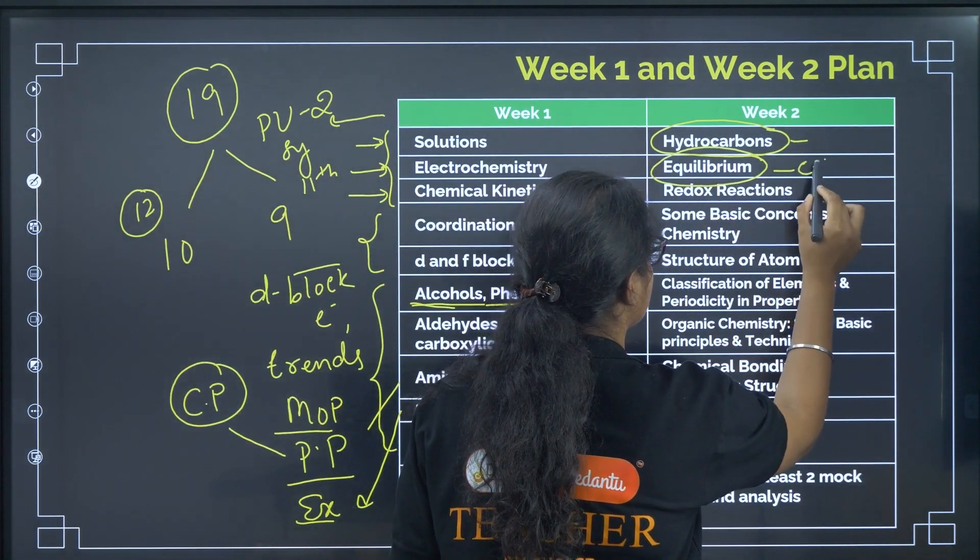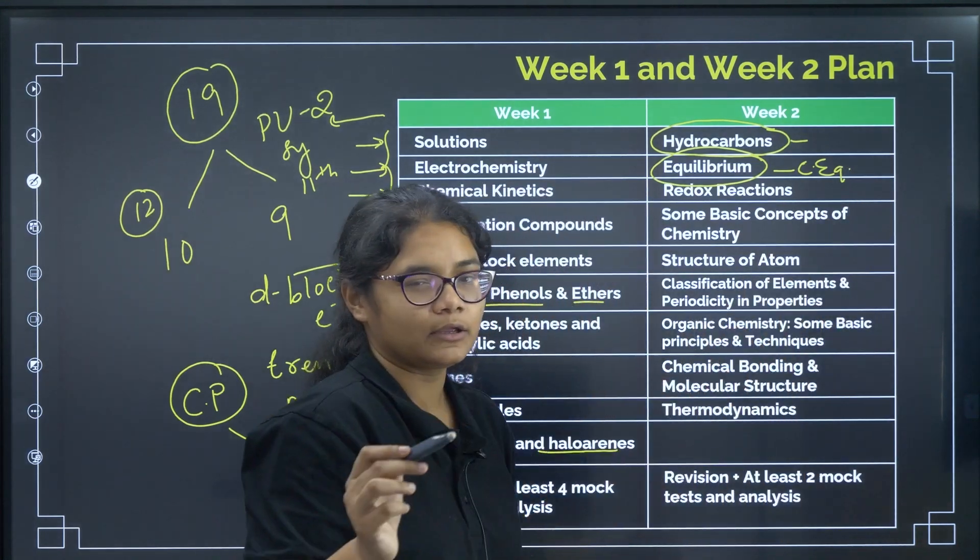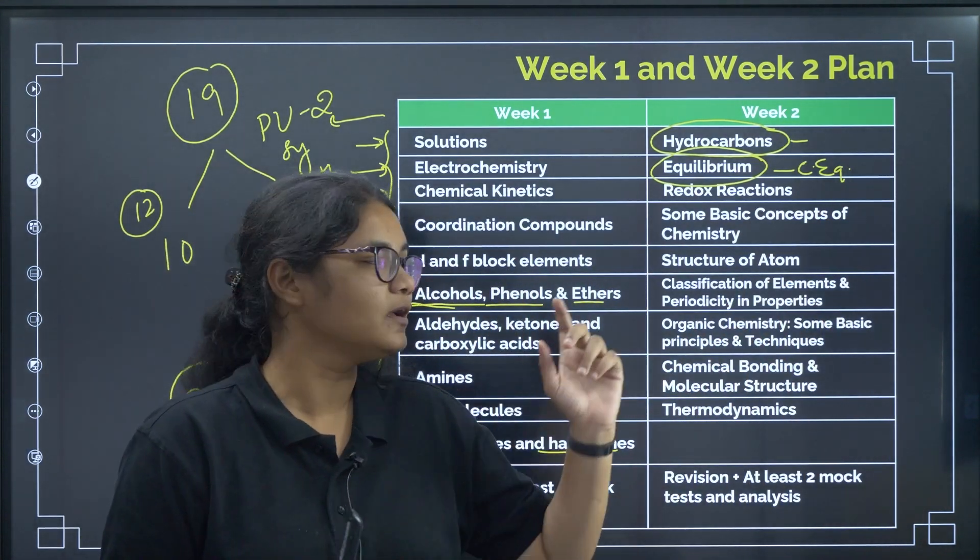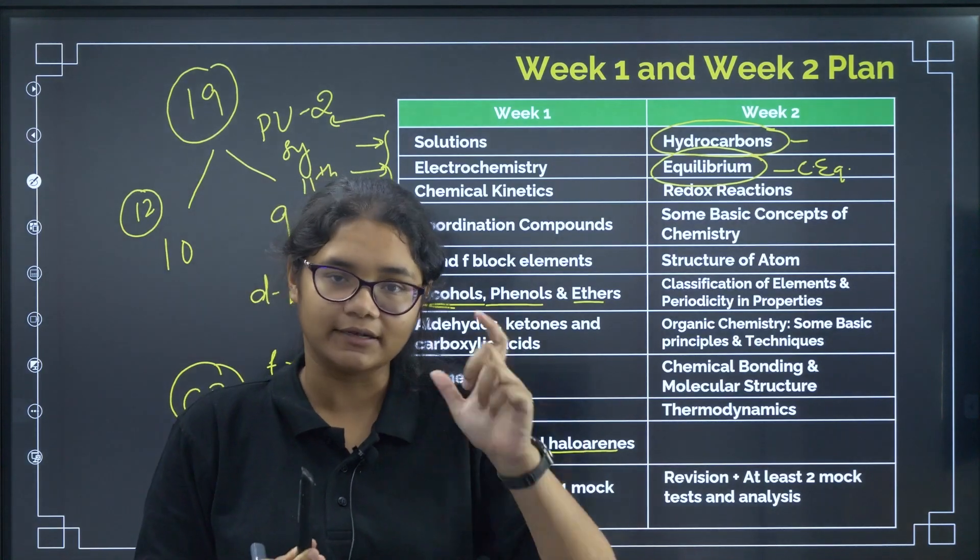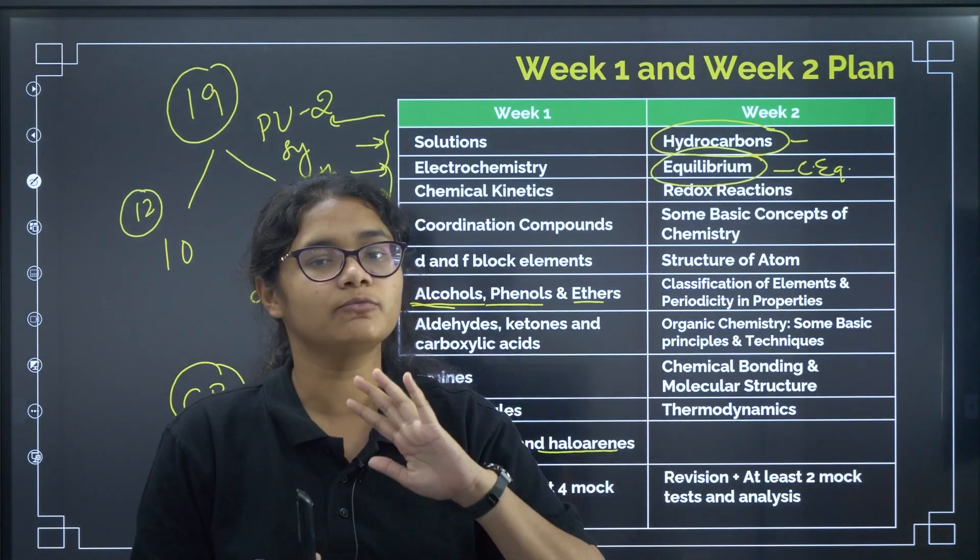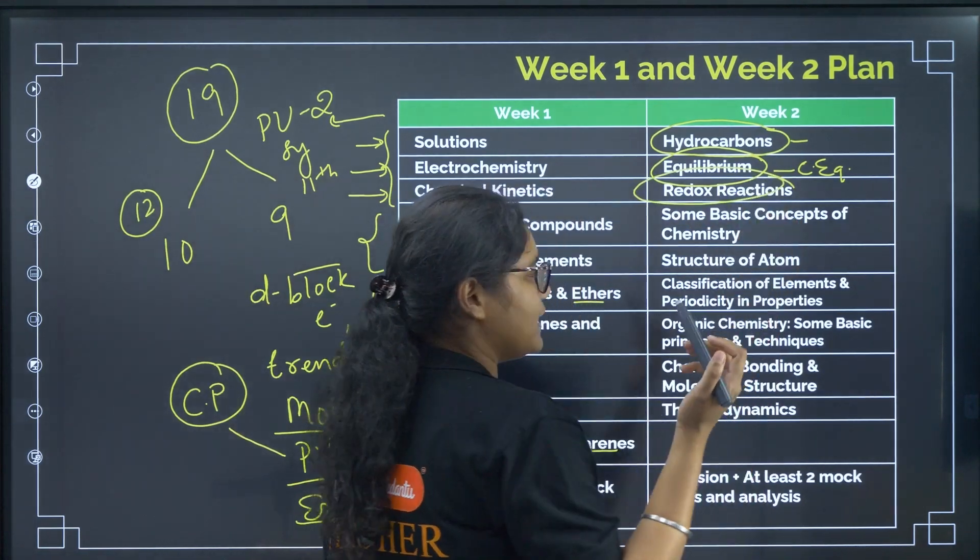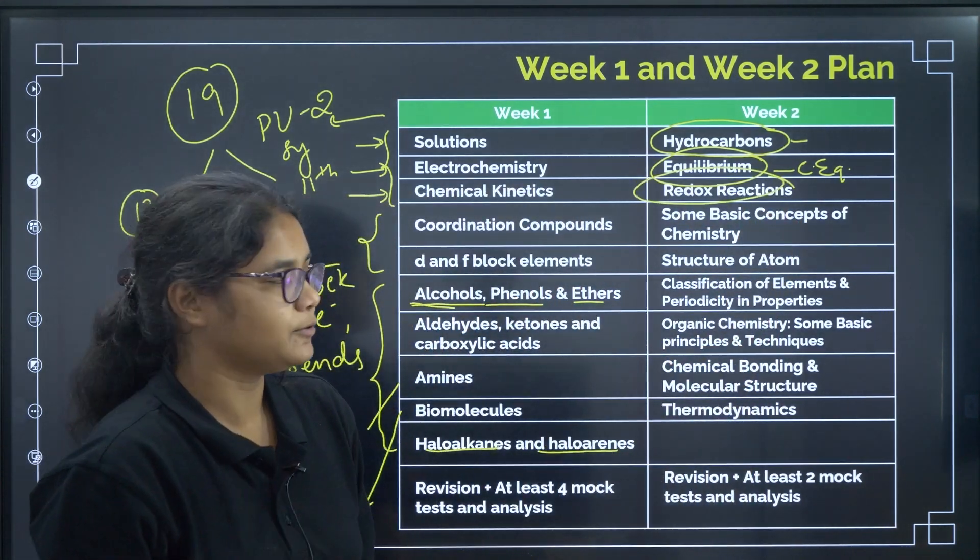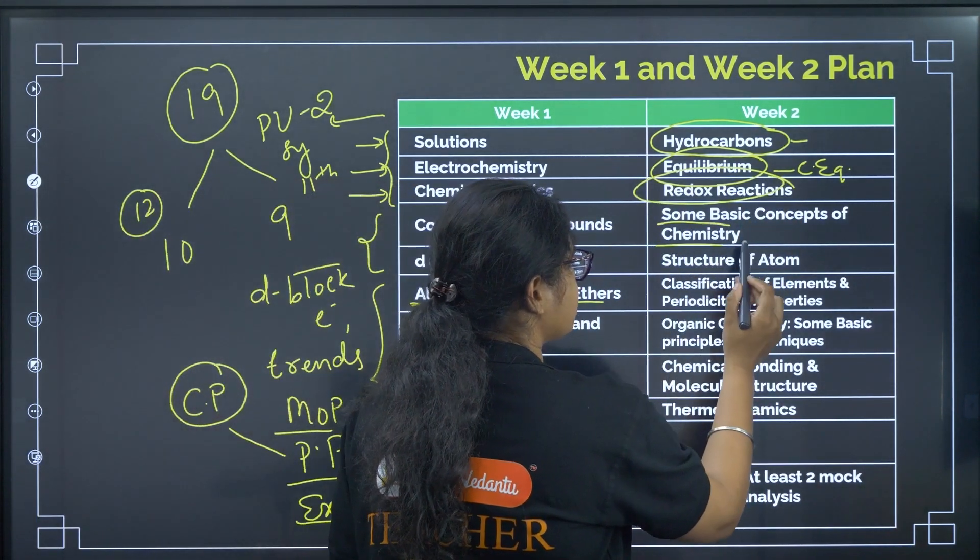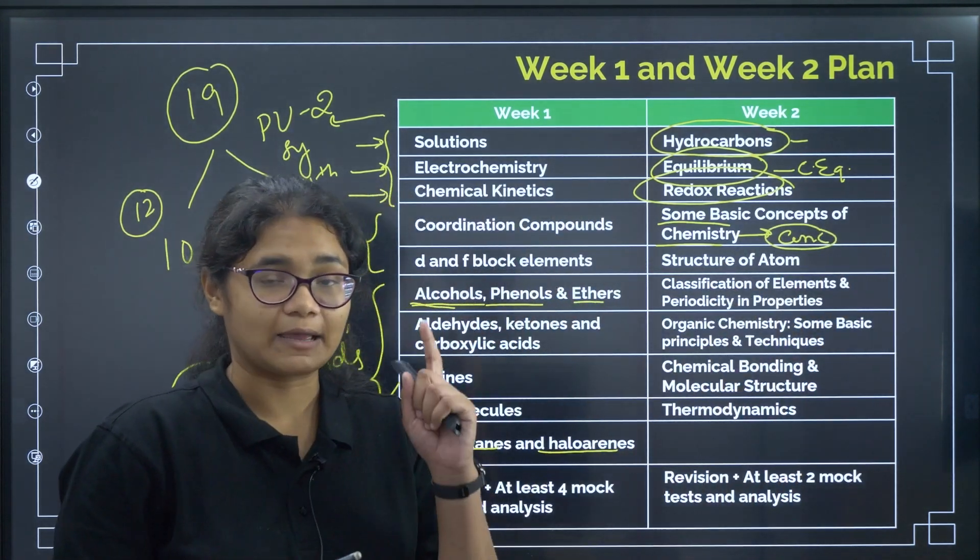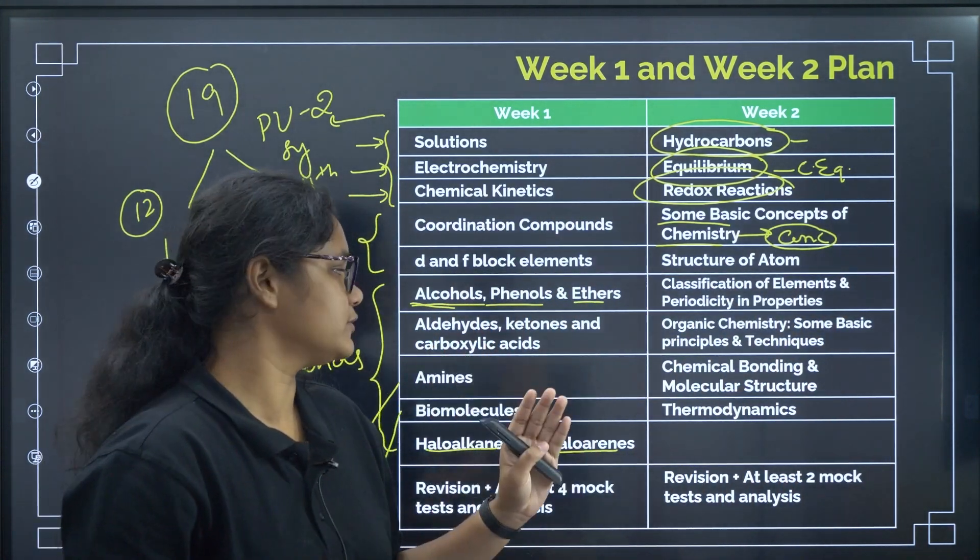Next, redox reaction, very easy. Balancing of reaction, oxidation, reduction you can do. Some basic concepts of chemistry here, concentration terms. All the concentration terms, empirical formula, molecular formula, revise on that. Structure of atom. Structure of atom, you know Bohr's formulas are there, Heisenberg uncertainty principle, all important formulas from structure of atom you can prepare.